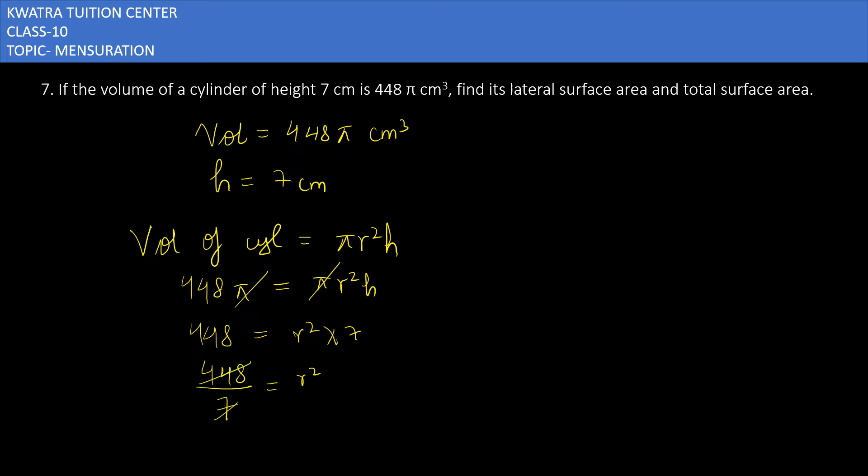So 7 and 448 can be written as 64, and 64 is equal to r². The value of r will be equal to 8 because 64 can be written as 8². Square and square can be cancelled.